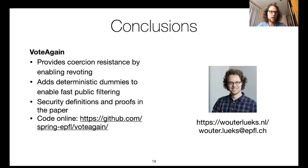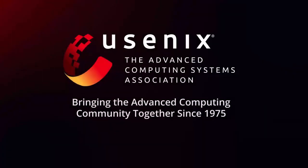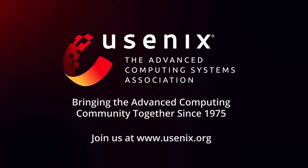To wrap up: VoteAgain provides coercion resistance by enabling re-voting. It adds deterministic dummy ballots to enable fast public filtering. The security proofs and definitions are in the paper, the code is online, and I'm happy to take any questions.